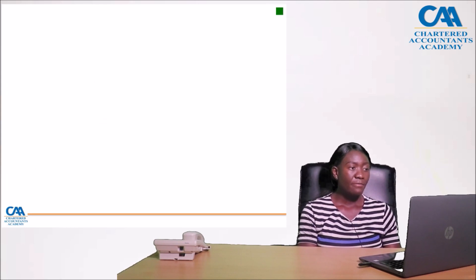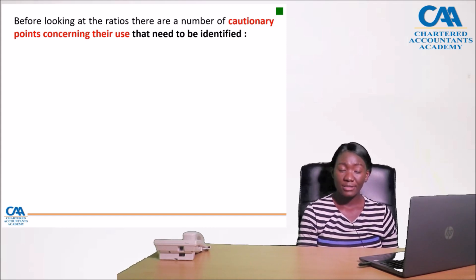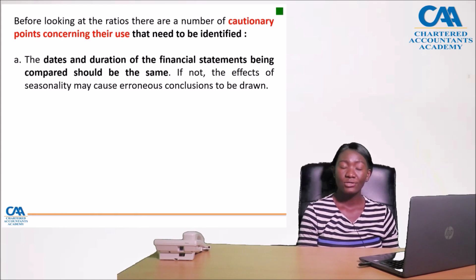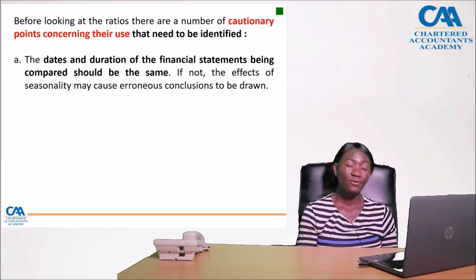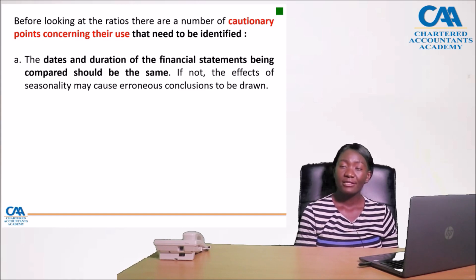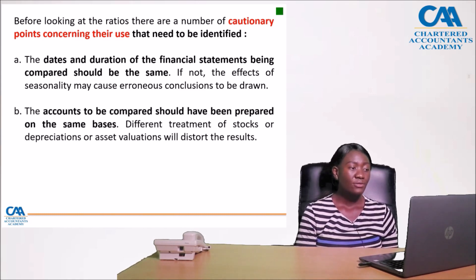Now let's discuss limitations of ratios. There are a number of cautionary points concerning ratios that need to be identified. When performing a ratio analysis, the date and duration of the financial statements being compared should be the same. If not, the effects of seasonality may cause erroneous conclusions to be drawn.